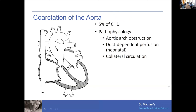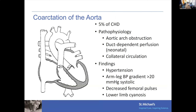In the neonatal population, coarctation can create duct-dependent perfusion. In older children and adults, collateral circulation can develop and it may present as hypertension. Main findings include upper limb hypertension, an arm-to-leg blood pressure gradient of more than 20 mmHg systolic, decreased amplitude of femoral pulses, and lower-limb cyanosis in neonates. If the ductus is open, it can shunt from the pulmonary artery to the descending aorta, causing lower-limb cyanosis when pulmonary pressures exceed descending aortic pressures.